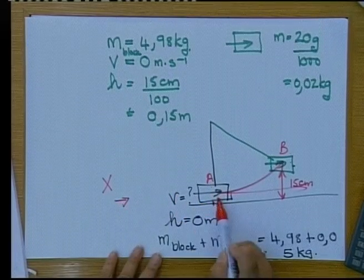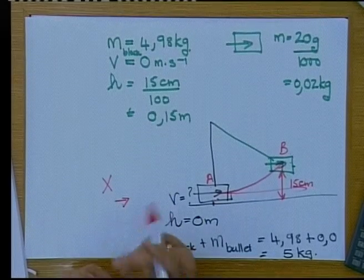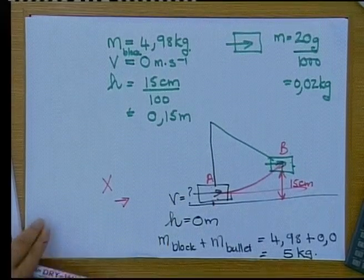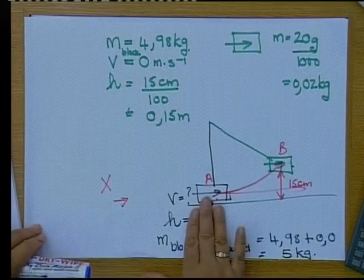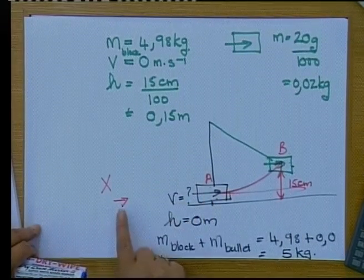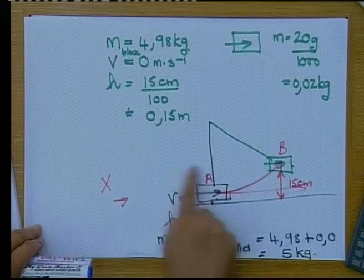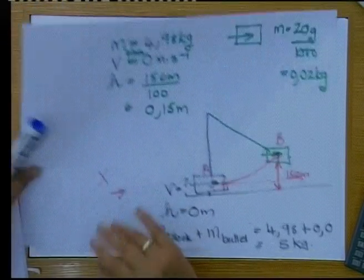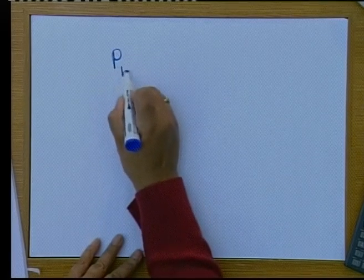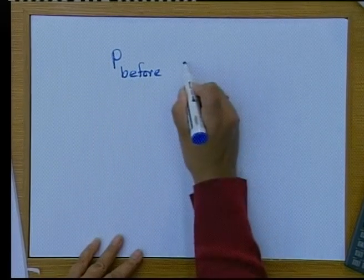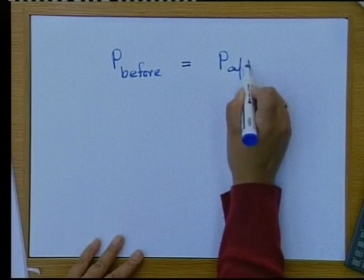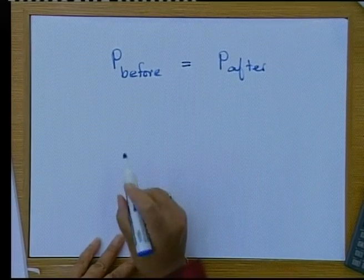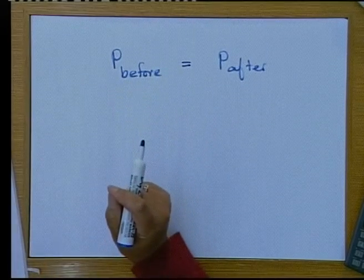When the bullet hits the block, we always have momentum during a collision. In an isolated system — where we only look at the bullet and the block — we can use conservation of momentum. Conservation of momentum simply states: p before the collision equals p after the collision.